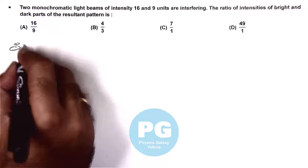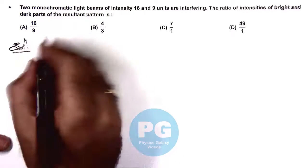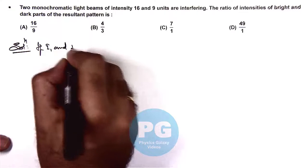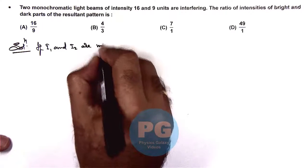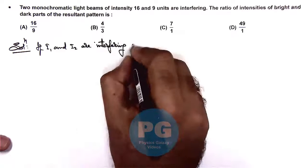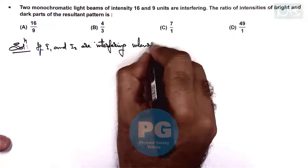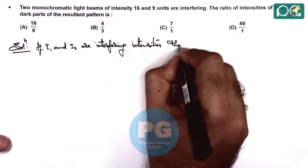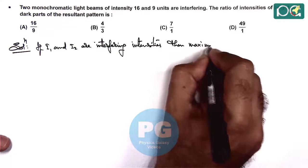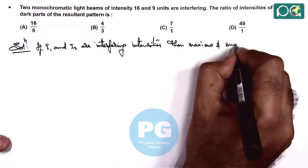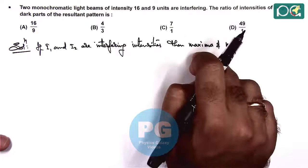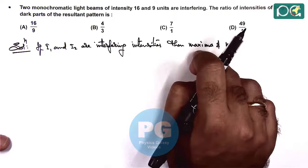In basic theory, we already discussed that if I1 and I2 are interfering intensities, then we have maxima and minima. Maxima corresponds to the brightest part of the interference, that is, constructive interference.